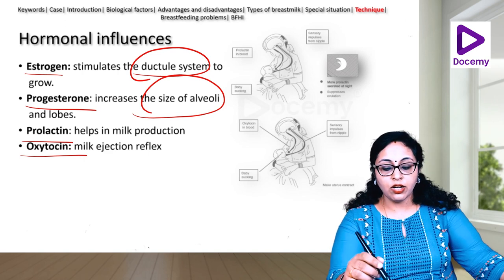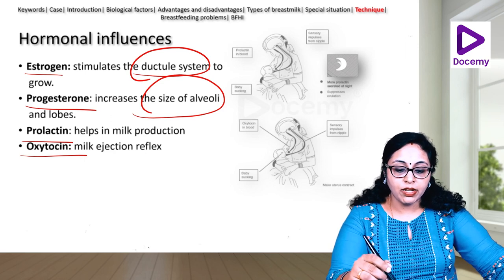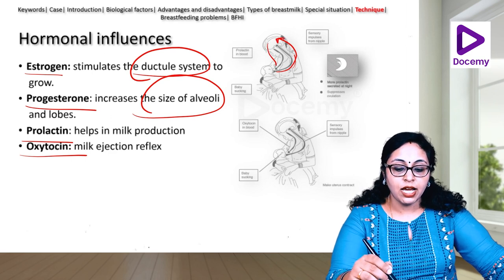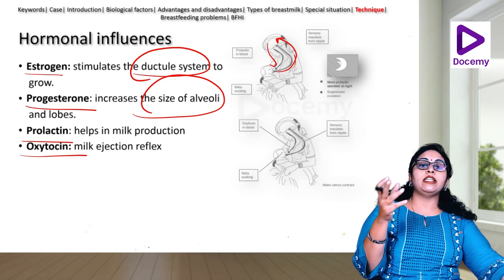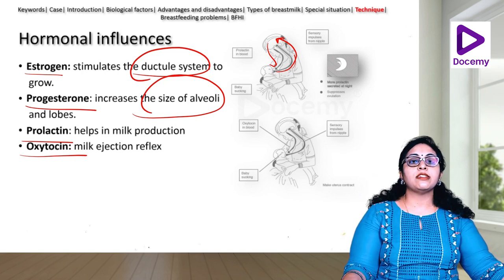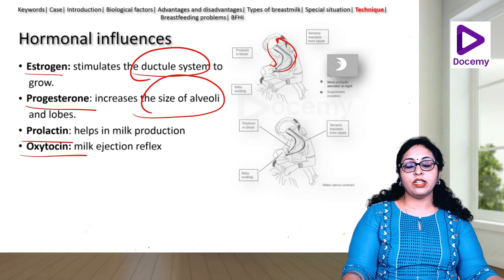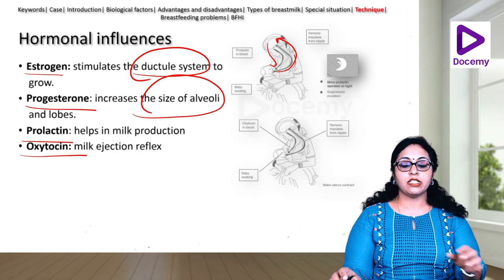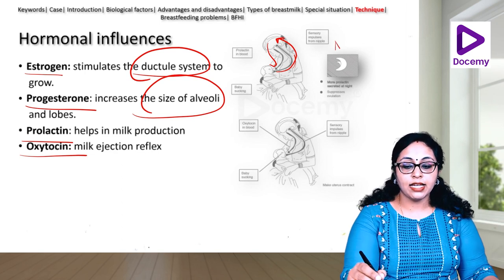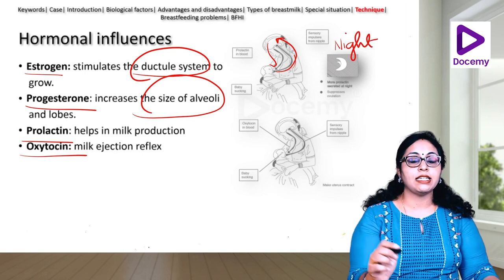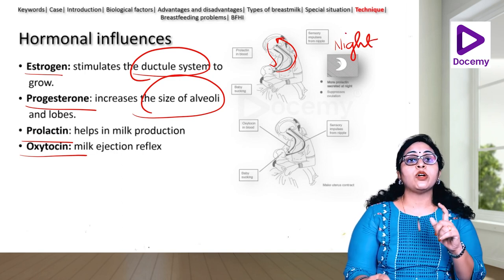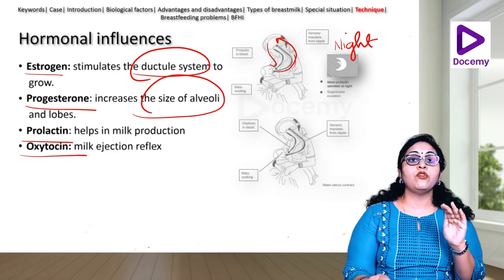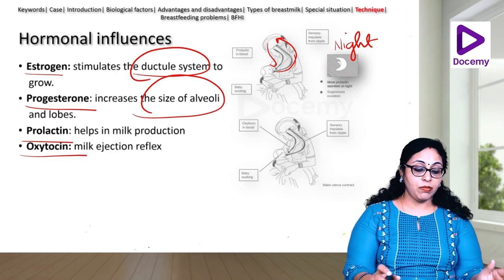Prolactin is stimulated when the baby sucks — impulses are sent to the brain, the pituitary releases prolactin, which acts on the alveoli for milk production. Oxytocin, released from the posterior pituitary, acts on myoepithelial cells for milk release. Prolactin levels are highest at night. That is why night feeds are very important — to keep establishing and maintaining good breast milk supply.